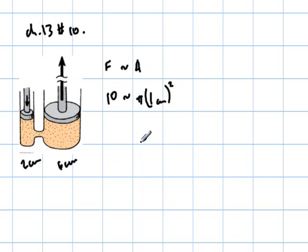For an area of pi times r, which is 1 centimeter squared. And now we look at how much force we would get for an area of pi times 3 centimeters squared. And notice that the diameter is 3 times as much, but the area comes out to be 9 times as much because the radius is being squared.